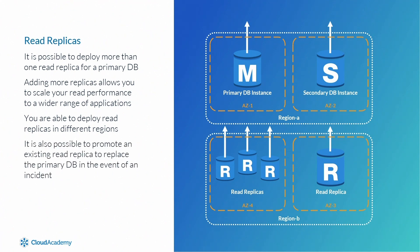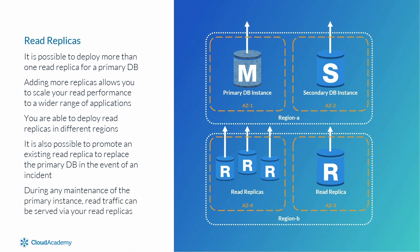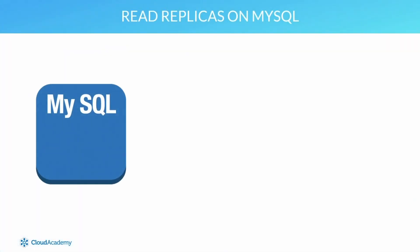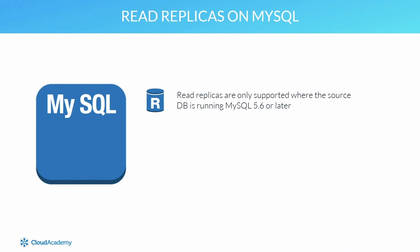It's also possible to promote an existing read replica to replace the primary database in the event of an incident. During any maintenance being performed on your primary instance where I/O requests may have been suspended, read traffic can still be served via the read replica. Now let's look at read replicas for each DB engine type, starting with MySQL. Read replicas are only supported where the source database is running MySQL 5.6 or later.